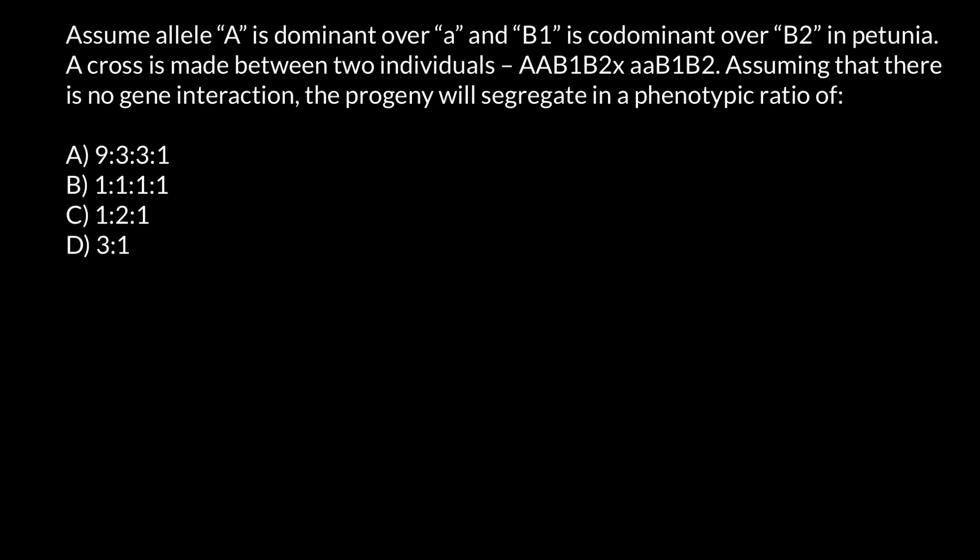A cross is made between two individuals of the following genotypes. Assuming that there is no gene interaction, the progeny will segregate in a phenotypic ratio of, and you have to choose the correct answer. As usual, I recommend you to pause video here, try to solve this problem on your own first, and when you are ready, you can run video again and compare your answer with my answer and explanation.